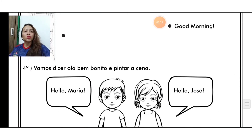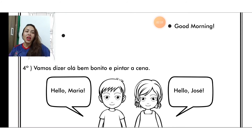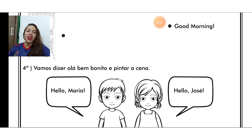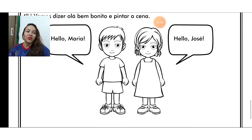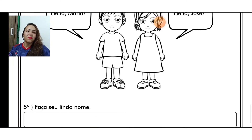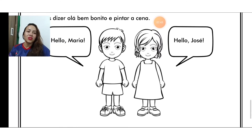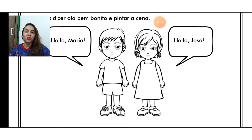Questão de número quatro. Vamos dizer olá bem bonito e pintar a cena. Hello, Maria. Hello, José. Hello! Isso mesmo, very good. Você vai deixar agora bem bonita essa cena. Esses dois kids, certo? Tanto a girl como o boy. Deixar os dois bem bonitos, bem coloridos.